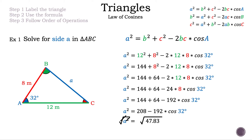Since we took the square root on the left-hand side, we do the same on the right. Remember, introducing a square root introduces two answers, which is why we write plus or minus. The plus or minus square root of 47.83 gives +6.72 or −6.72. Since we are dealing with distance, we discard the negative. Our final answer for example 1 is 6.72 meters.